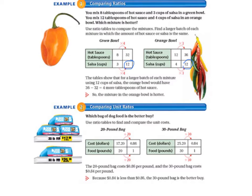So we're looking for 12 cups of salsa to be equal but our 36 is different so that way we can compare the 32 and the 36. So the tables show that for a larger batch of each mixture using 12 cups of salsa, the orange bowl would have 4 more tablespoons of hot sauce, so the mixture in the orange bowl is hotter.